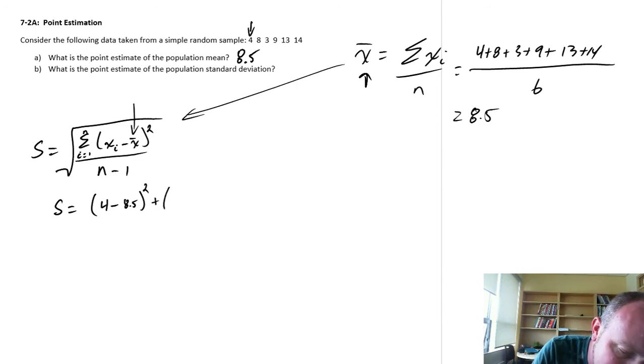So then this is going to be plus. The next observation is 8 minus 8.5 squared. Plus the next observation is 3 minus 8.5 squared.